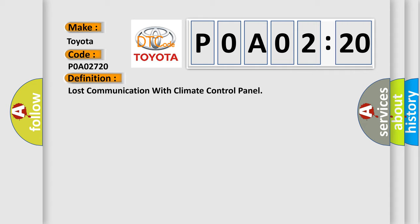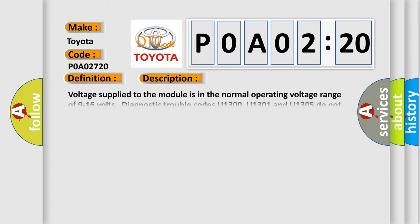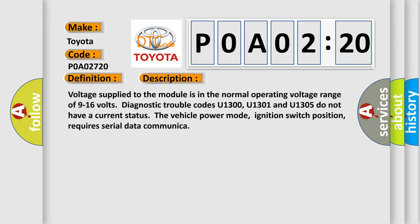And now this is a short description of this DTC code. Voltage supplied to the module is in the normal operating voltage range of 9 to 16 volts. Diagnostic Trouble Codes U1300, U1301, and U1305 do not have a current status. The vehicle power mode (ignition switch position) requires serial data communication.